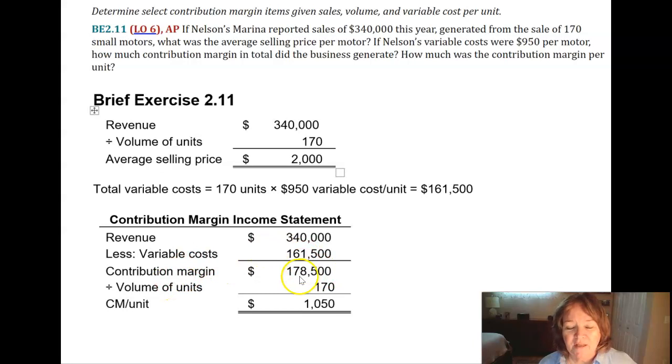Contribution margin, then, is $178,500. And if I divide that by my number of units, I've got the contribution margin per unit.